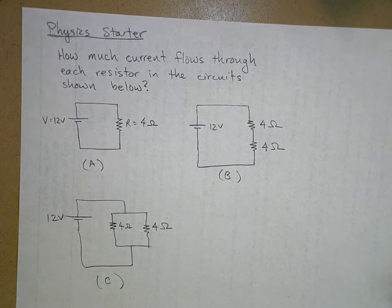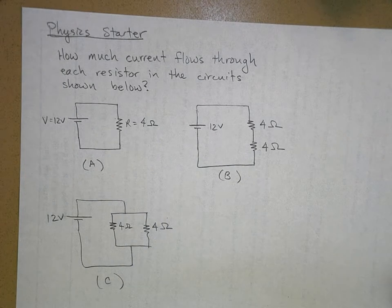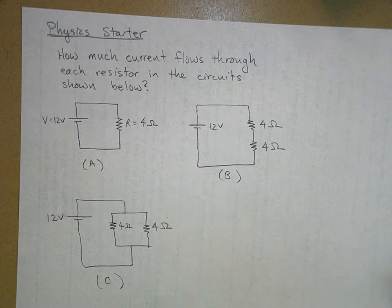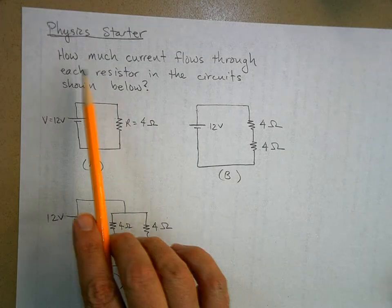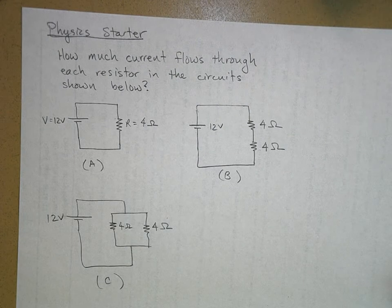Okay, so today's starter is all about simple DC circuit problems. I'm just dealing with four ohm resistors here, playing around with them, and hopefully we can see a pattern. The question is, how much current is flowing through each resistor in the circuit shown below?